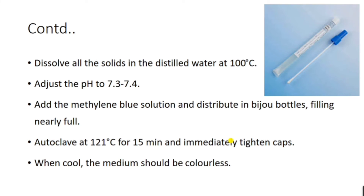When using Stuart's transport medium, dissolve all solid content in distilled water at 100 degrees Celsius. The pH needs to be adjusted between 7.3 and 7.4. Once pH is adjusted, methylene blue indicator is added and the liquid media is distributed in bijou bottles, filling them nearly full. Autoclave at 121 degrees Celsius for 15 minutes and immediately tighten the cap to avoid contamination. When cold, the medium should be colorless.